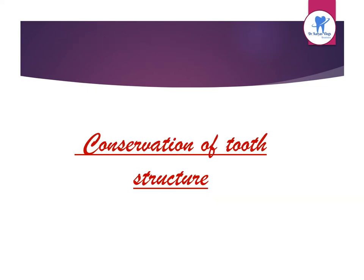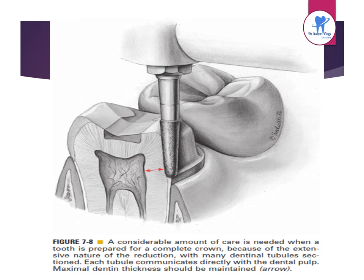Regarding conservation of tooth structure, considerable care is needed when preparing a tooth for a complete crown because of the extensive nature of the reduction, with many dentinal tubules sectioned. Each tubule communicates directly with the dental pulp, so maximum dentine thickness should be maintained.